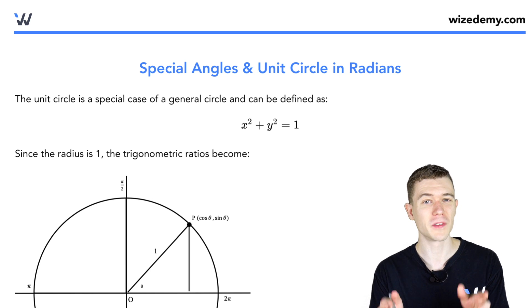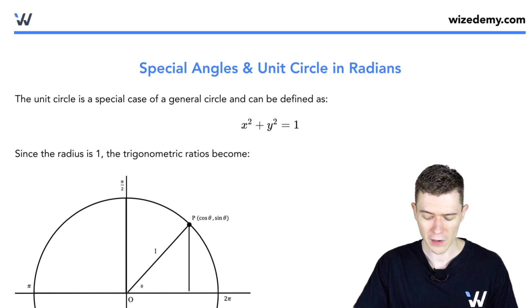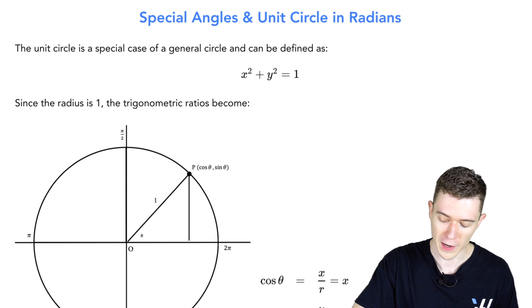Let's talk about some special triangles and the unit circle. Here's the unit circle defined by this equation, x squared plus y squared equals 1.